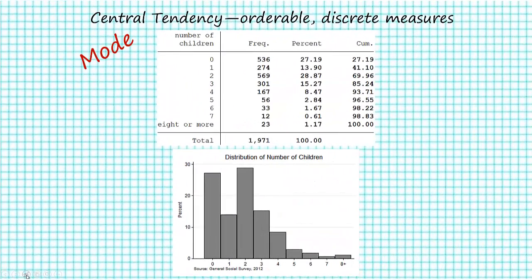We're also going to calculate the mode in this next example. The difference is that this variable happens to be an orderable discrete measure. In 2012, General Social Survey respondents were asked about how many children they had. Possible values range from 0 to as high as 8 or more. Underlying that final category are actual numbers, so when it says 8 or more, the computer sees the value of 8.